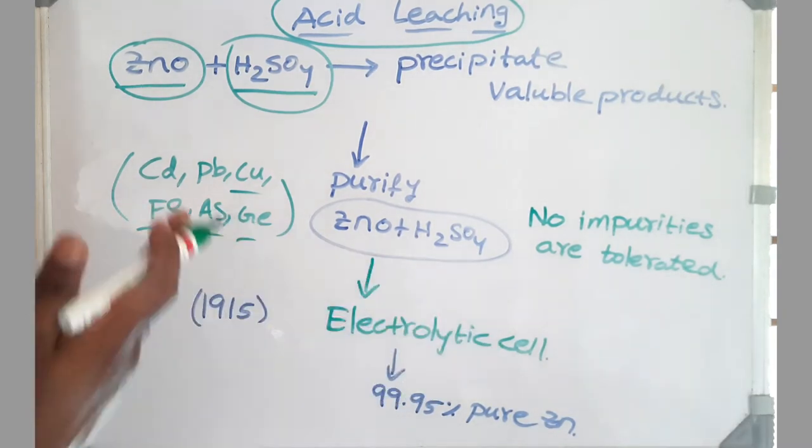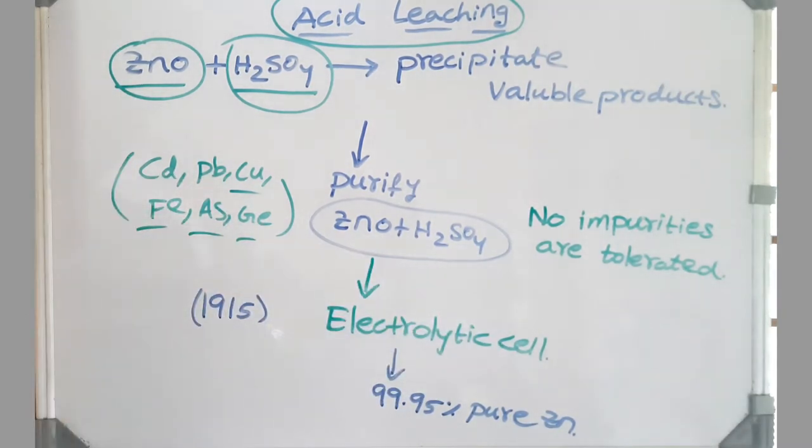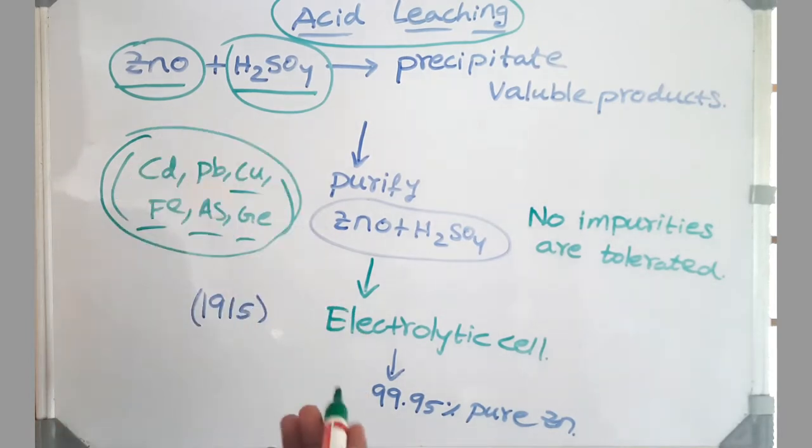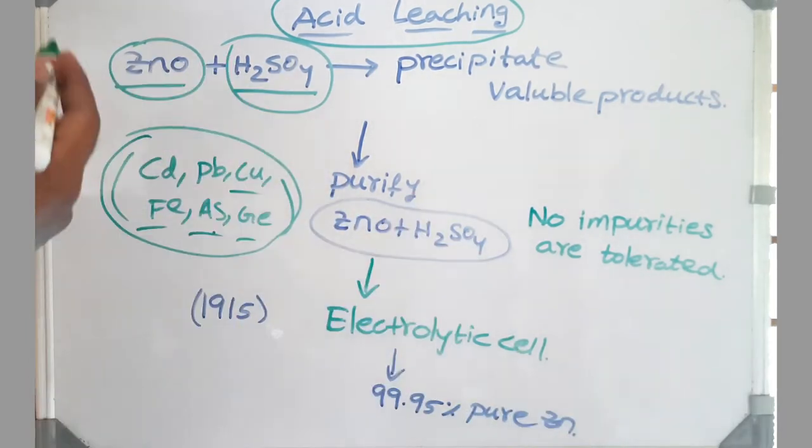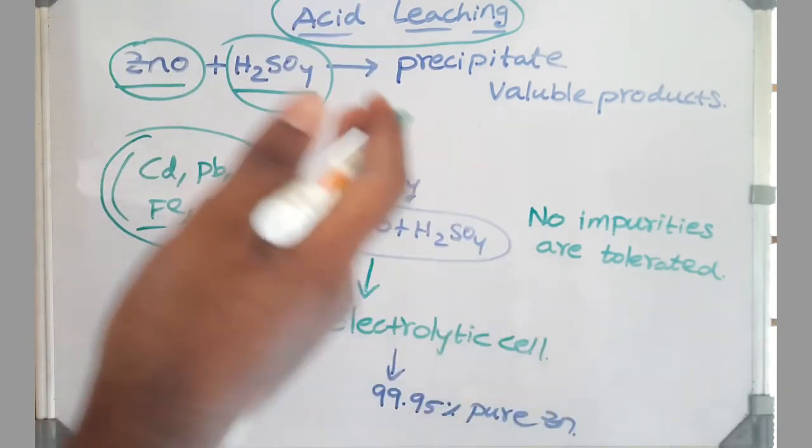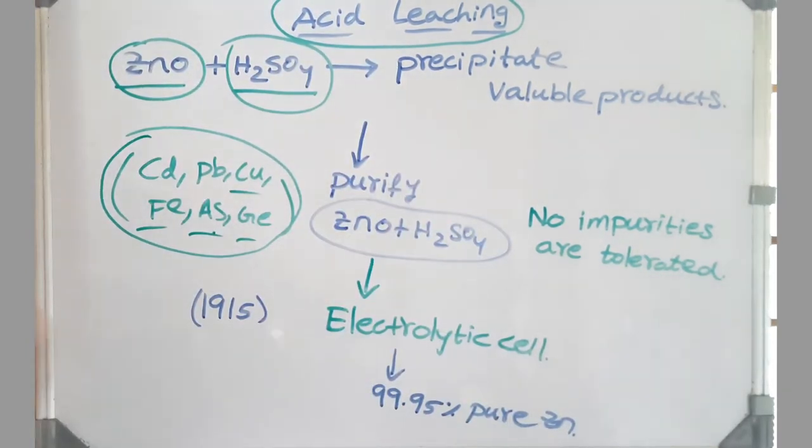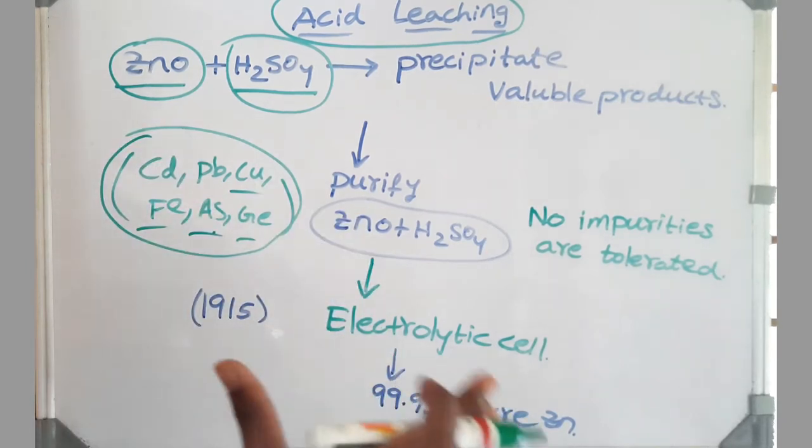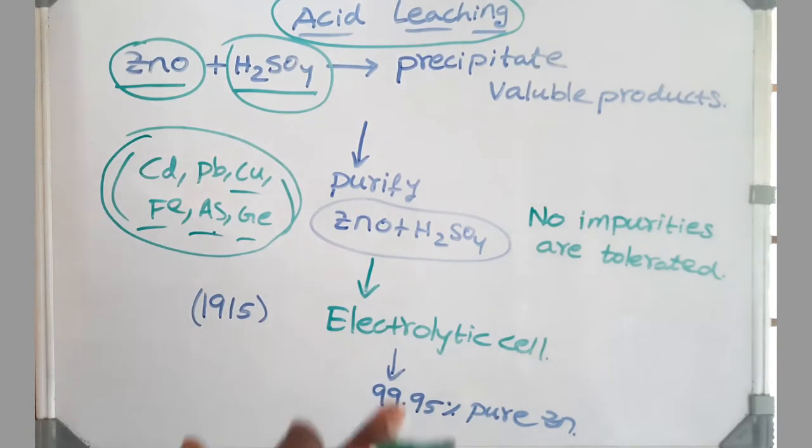Friends, for copper electrolysis we know we recover byproducts after electrolysis, but here we have to do this before electrolysis. There is a strong reason behind this. Friends, during electrolysis, after deposition of zinc, if any of these elements are present in the solution, the deposition of these elements from the solution takes place at the cost of dissolving zinc which got deposited on the cathode. This process we call cementation.